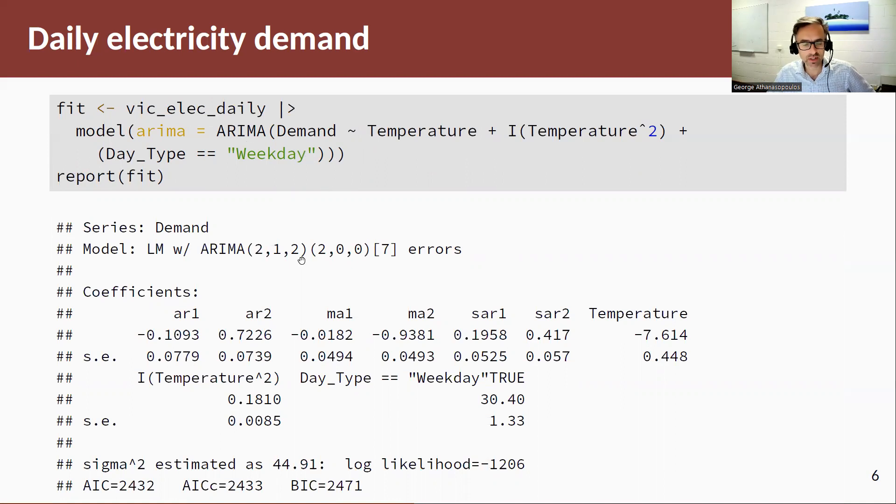So here's the estimated model. We see that Fable goes away and estimates the regression model and the regression errors are modeled by an ARIMA(2,1,2)-(2,0,0) process. So there's a first order differencing there required. So Fable automatically differences all the variables, estimates the model, and returns the estimation output.